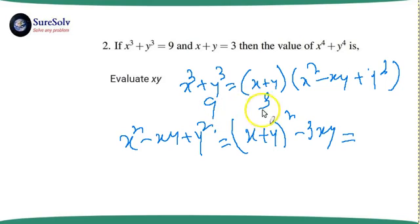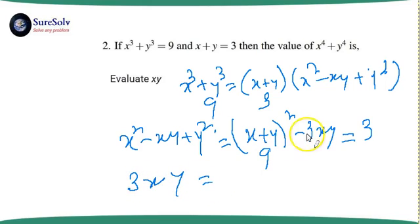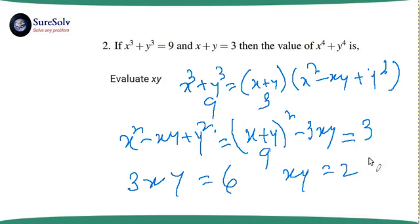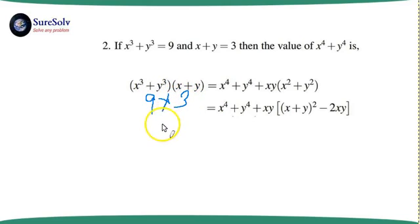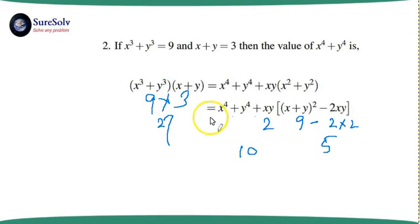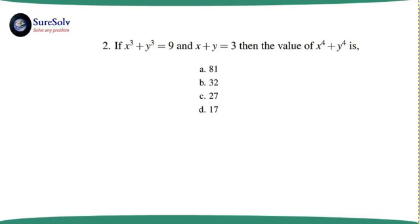So 3xy = 6, meaning xy = 2. Going back to the expanded multiplication of x³ + y³ with x + y, we substitute the values: 9 × 3 = 27, minus 2 × (x² + y²). With x + y = 3 and xy = 2, we get x² + y² = 9 - 4 = 5. So 27 - 2 × 5 = 27 - 10 = 17. Therefore x⁴ + y⁴ = 17. Option D is the answer.